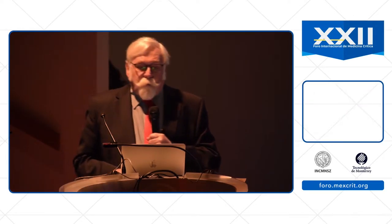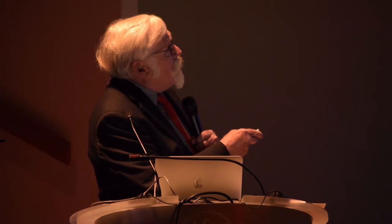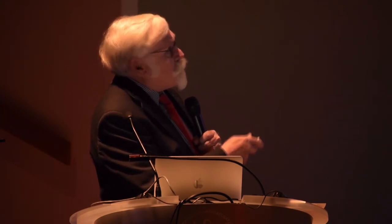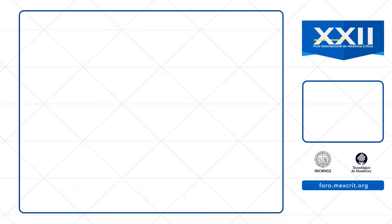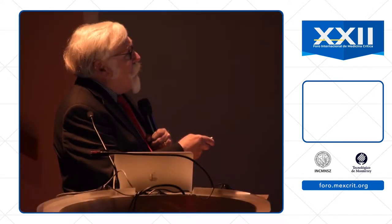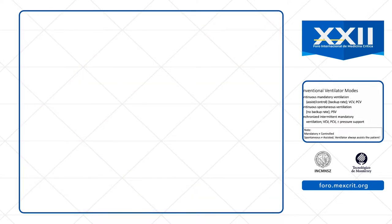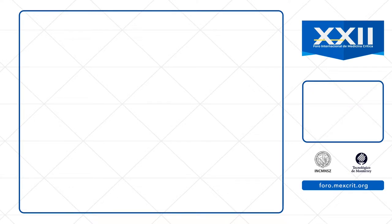Shown on this slide are conventional ventilator modes that I'm sure all of you are familiar with. We have continuous mandatory ventilation that most of us know as assist control — this is volume control ventilation and pressure control ventilation. There are modes that allow continuous spontaneous ventilation where there's no backup rate, such as pressure support ventilation. And then we can mix mandatory and spontaneous breaths with synchronized IMV, where if the patient's rate is greater than the rate set on the ventilator, the patient receives a pressure support breath.